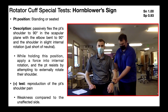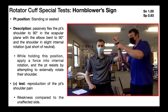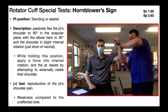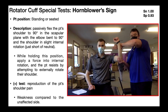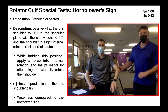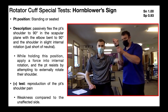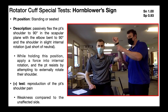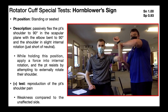You'll see I passively flex his shoulder up to 90 degrees in the scapular plane, and then the elbow is bent to 90 degrees. That's where I apply that internal rotation force, and he resists by activating his shoulder external rotators. A positive test is going to be reproduction of the patient's familiar shoulder pain, and you will also see weakness compared to the unaffected side.